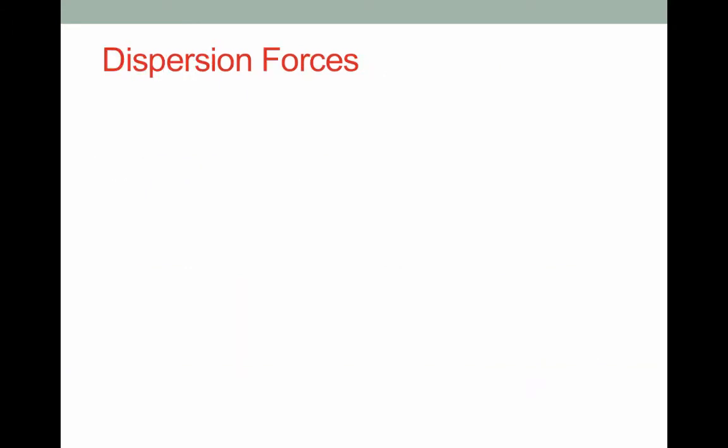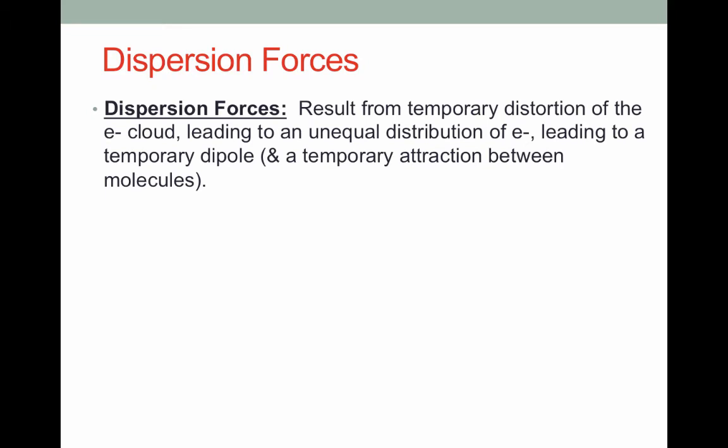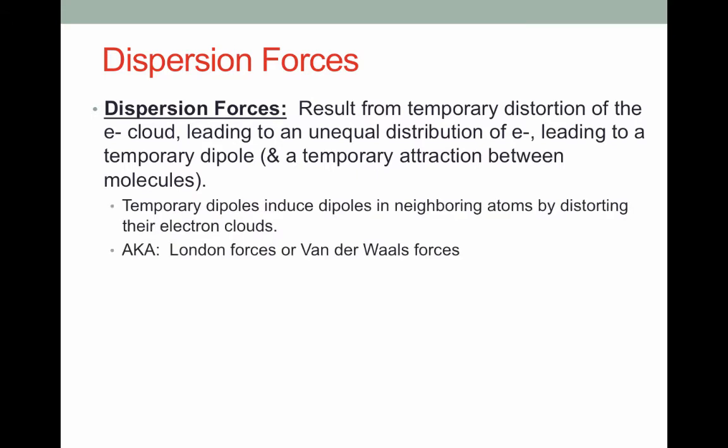Let's start by looking at dispersion forces, the weakest of all the IMFs. Dispersion forces result from a temporary distortion of the electron cloud, leading to an unequal distribution of electrons. This causes a temporary dipole, or a temporary asymmetry, in the electron cloud of the molecule. Once one molecule in a sample has a distortion of its electron cloud, it will induce dipoles in its neighboring molecules.